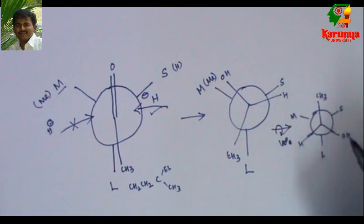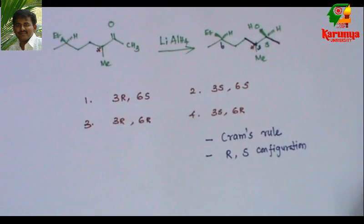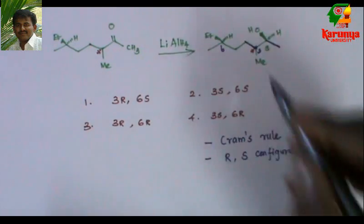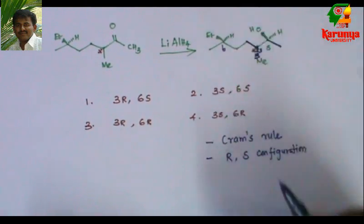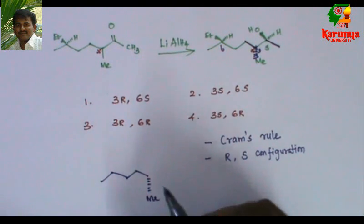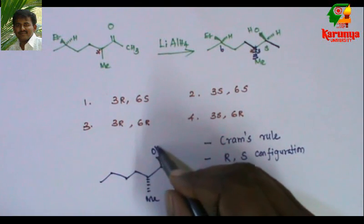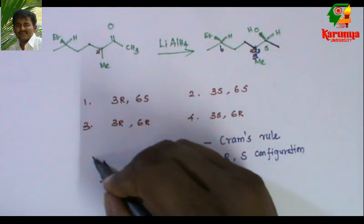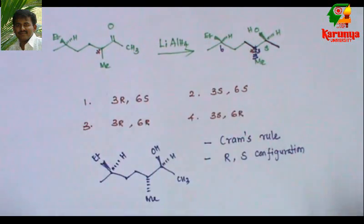Now compare this: methyl and hydroxyl, they are trans to each other. So if you see as such, they are cis, when you go for the zigzag line, it is trans. So I applied it here: hydroxyl and methyl group, they should be trans. That is the stereochemistry of this methyl group should be like this.